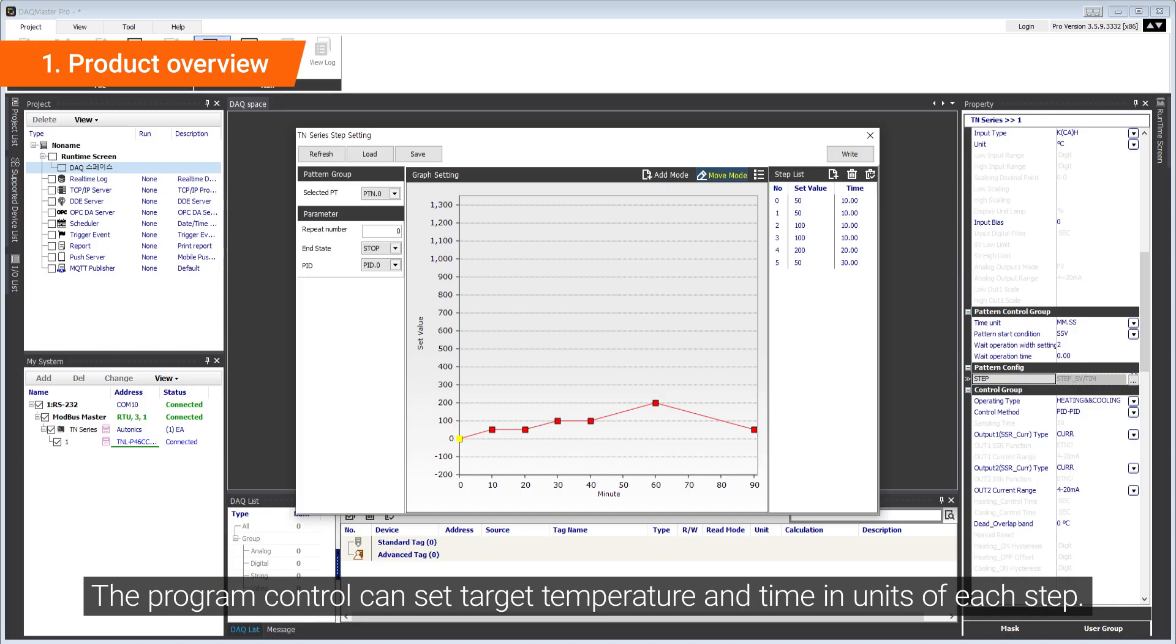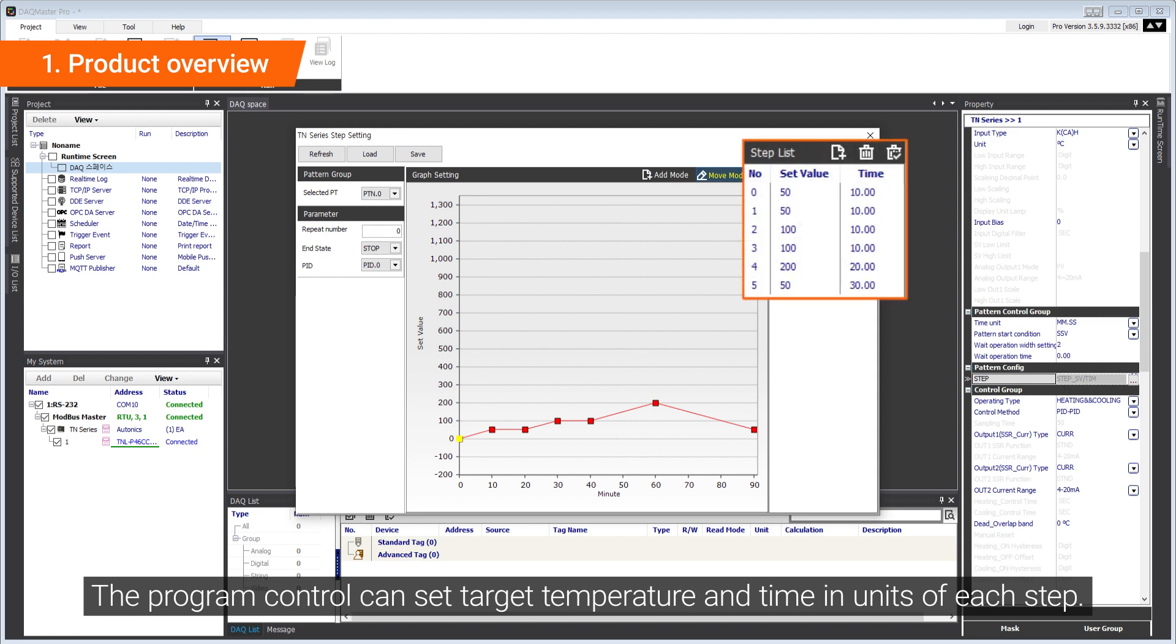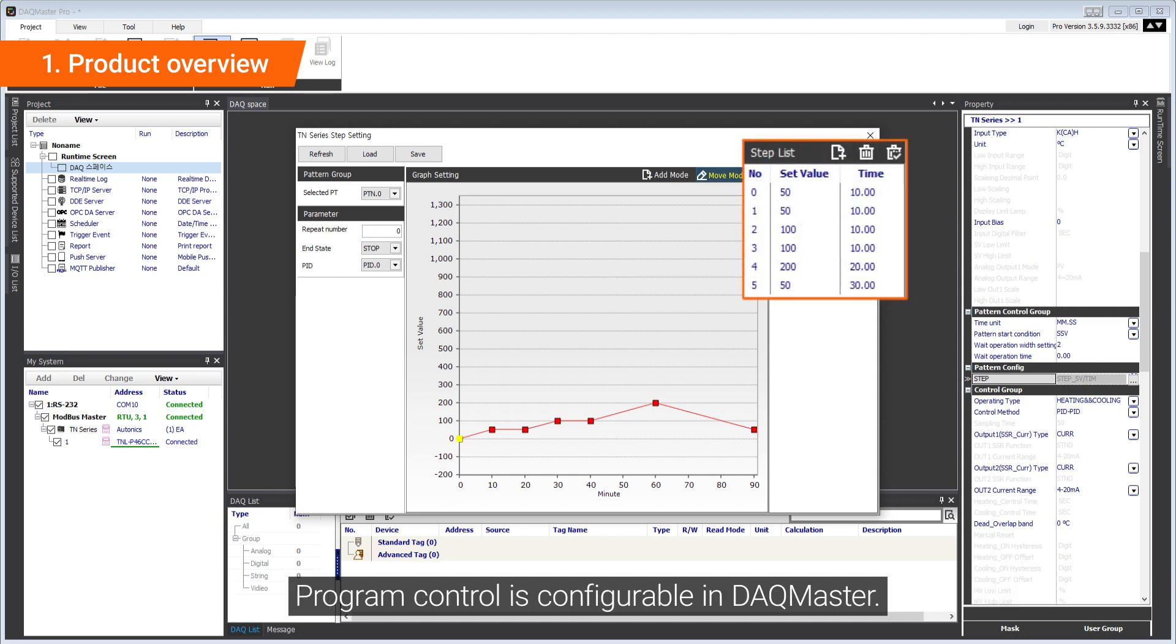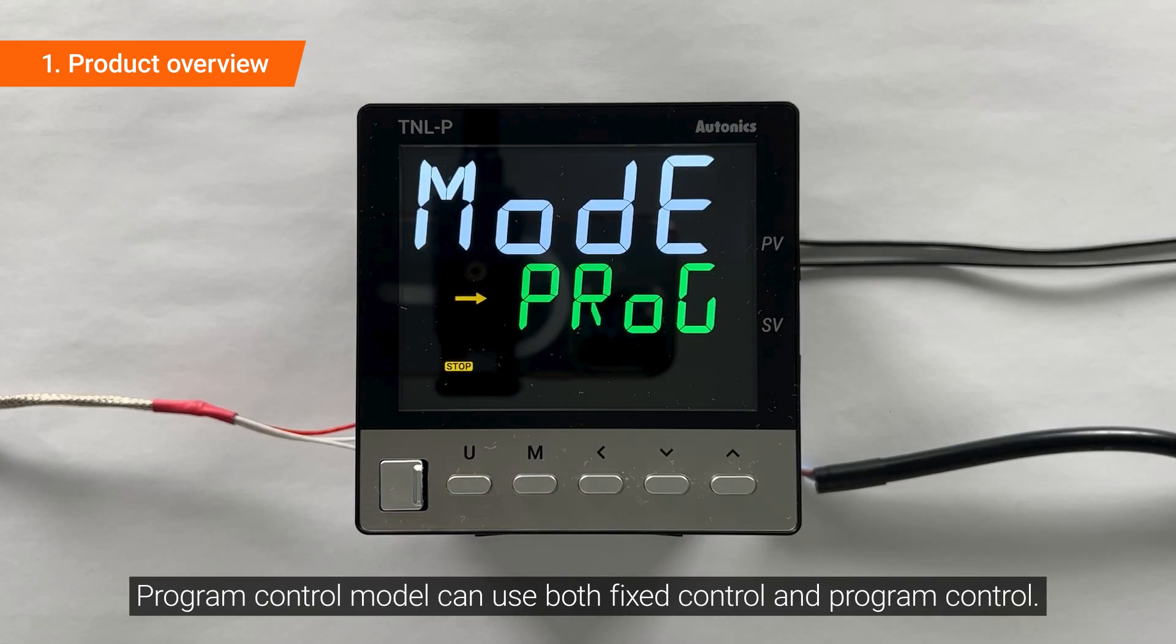The program control can set target temperature and time in units of each step. Program control is configurable in DAQ Master. Program control model can use both fixed control and program control.